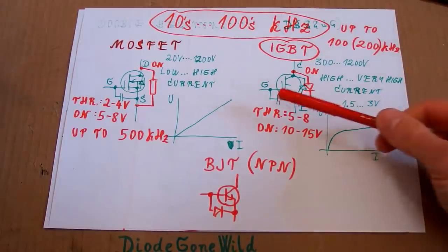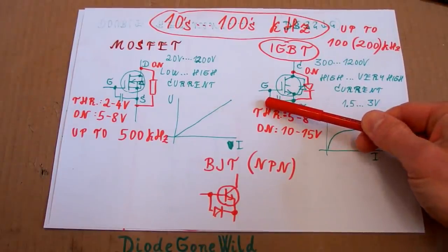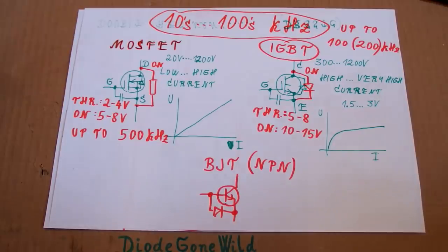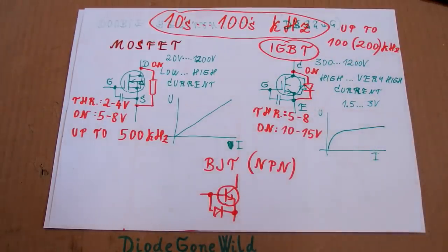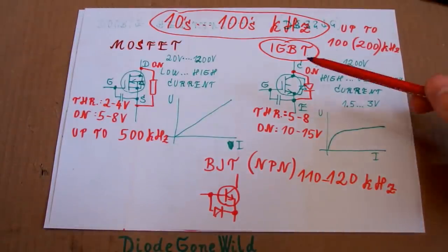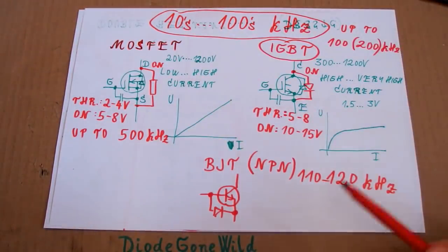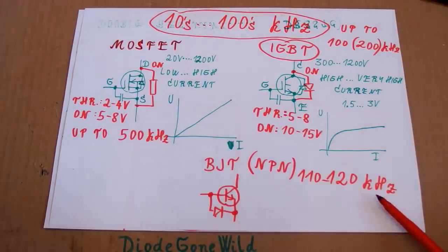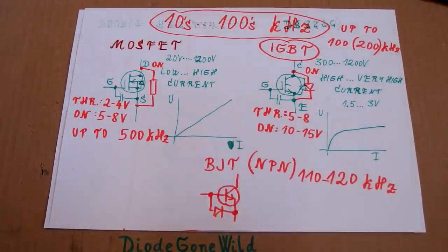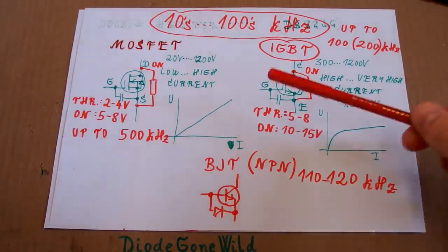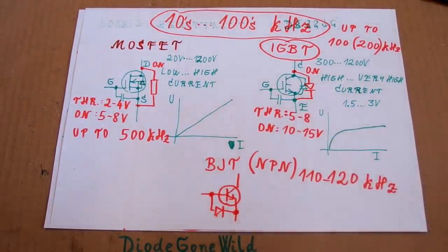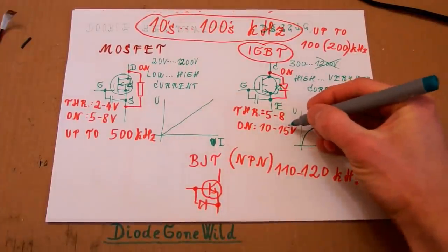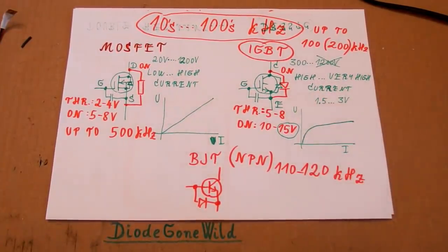IGBTs also have lower gate capacitance, can handle high currents, and the recent ones are not that slow — they are getting faster and faster. They are still a little slower than MOSFETs but my secondary is probably going to resonate at about 110 or 120 kilohertz, and this shouldn't be a problem for modern IGBTs. The only disadvantage is that the gate requires more voltage, but I plan to use about 15 volts so it shouldn't be a problem.